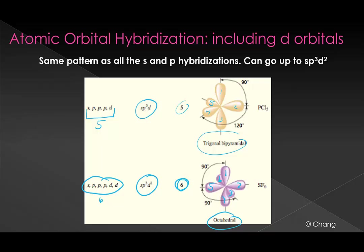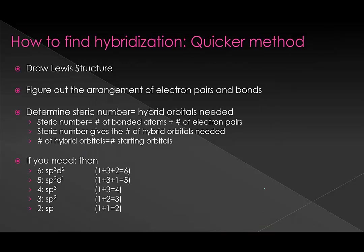We're not going to go through these in dramatic detail because you can pick up the pattern. Now, you have to have this in the backdrop of your memory when you go to solve these problems. However, that's not how you're actually going to determine hybridization because you want to do this much quicker. So first, we draw our Lewis structure, which sets us up so we know how many bonds there are and what types of bonds there are to each atom, letting us figure out the arrangement of electron pairs and bonds.